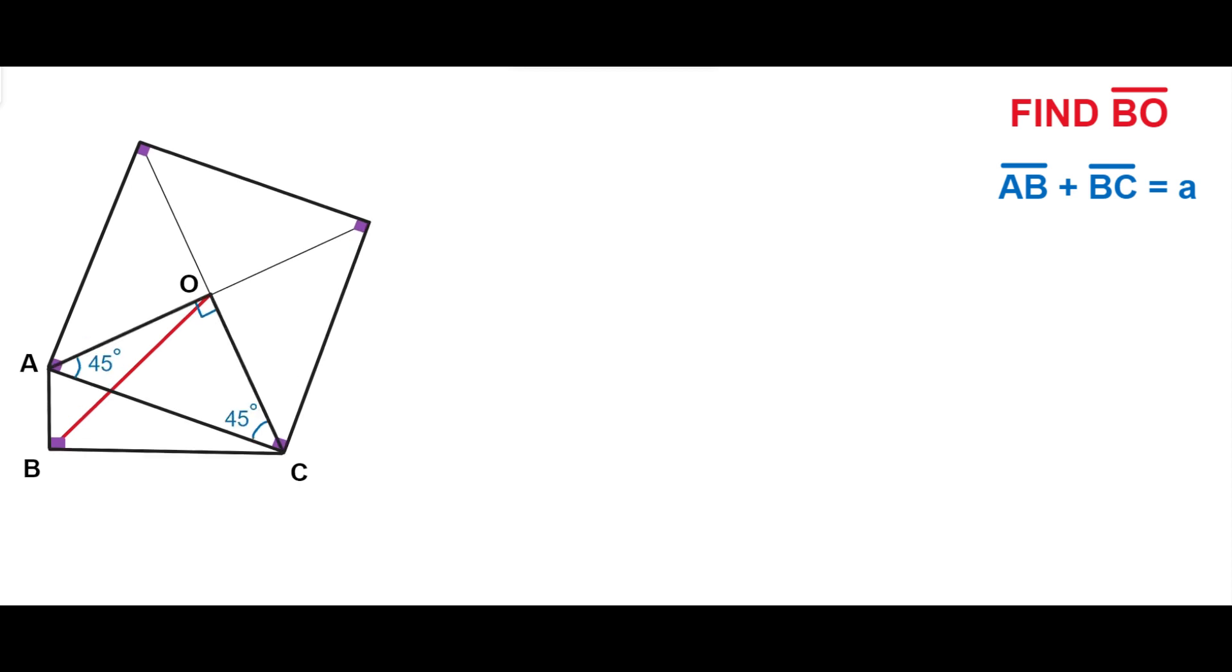Now let's pay attention to the quadrilateral BAOC. In this quadrilateral, the sum of the opposite right angles AOC and ABC is 180 degrees, which means these two angles are supplementary.